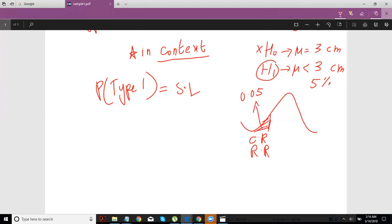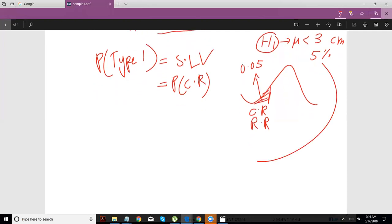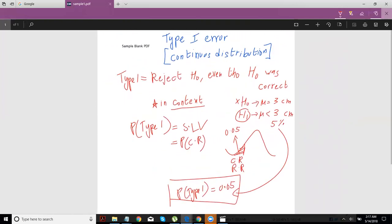So the probability would basically just be the probability of your critical region, which is basically your significance level. So in this particular case, the probability of you making a type 1 error would be 0.05, case closed, literally as simple as that. And that said, for a continuous distribution, it is different for a discrete distribution. There's a separate video for that.